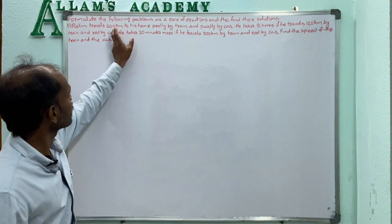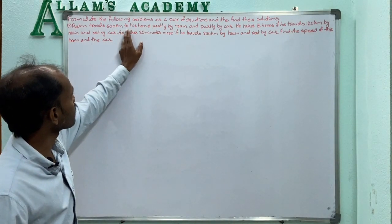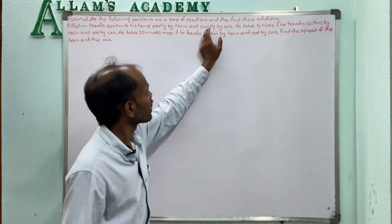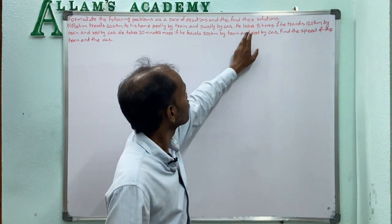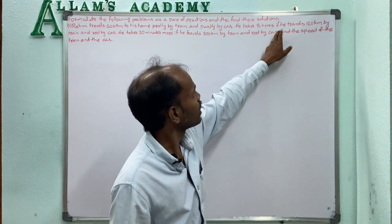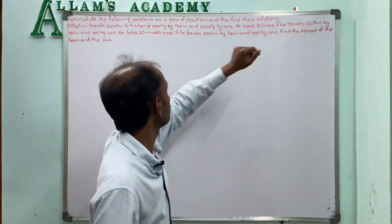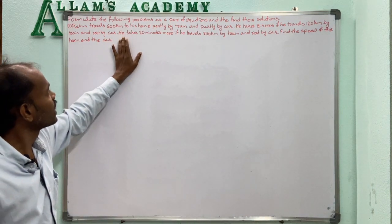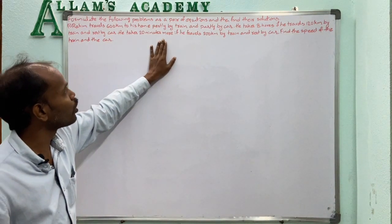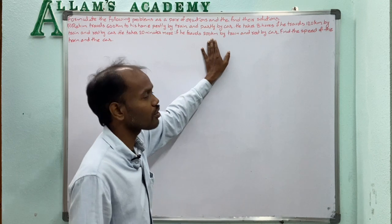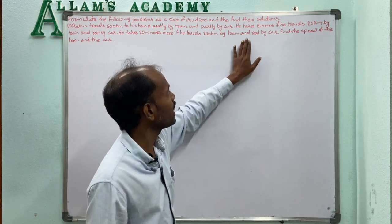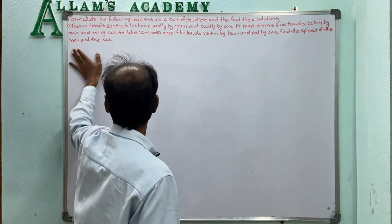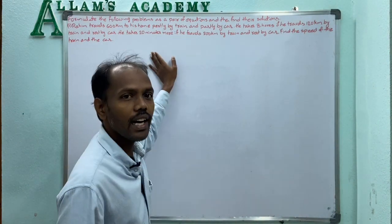Rahim travels 600 kilometers to his home, partially by train and partly by car. He takes 8 hours if he travels 120 kilometers by train and the rest by car. He takes 20 minutes more if he travels 200 kilometers by train and the rest by car. Find the speeds of the train and car.